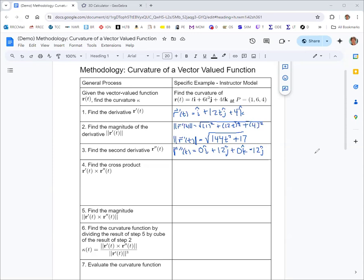Now we're ready to do the cross product of r prime with r double prime. We're going to use the matrix technique for that. The first row are the basis vectors i, j, and k. The second row is the components of r prime: 1, 12t, and 4. The third row are the components of r double prime: 0, 12, and 0.